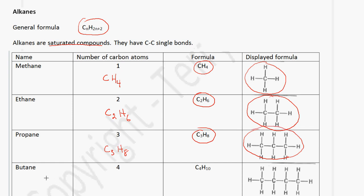The next member is butane, which has 4 carbon atoms. This is written as C4H. If we use the formula, it'll be 2 multiplied by 4, which is 8, plus 2, which gives us 10. So that's how we got C4H10. The displayed formula has 4 carbon atoms and 10 hydrogen atoms.